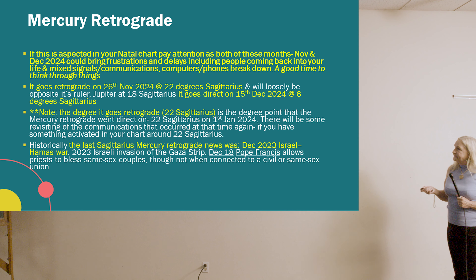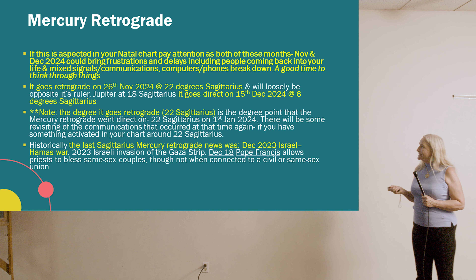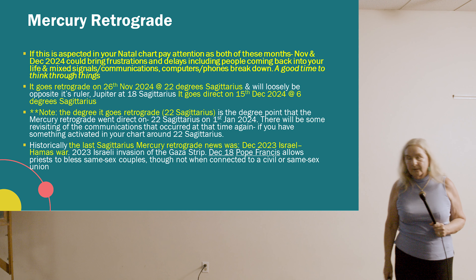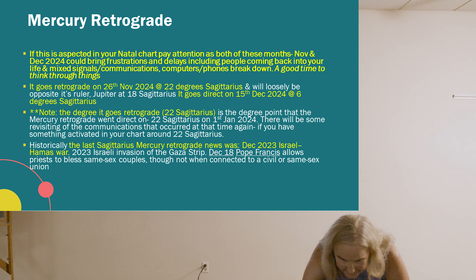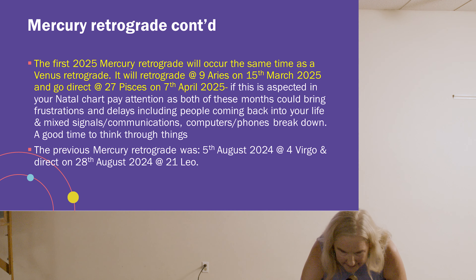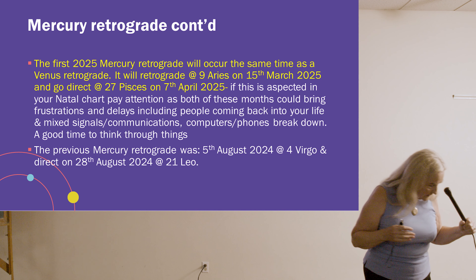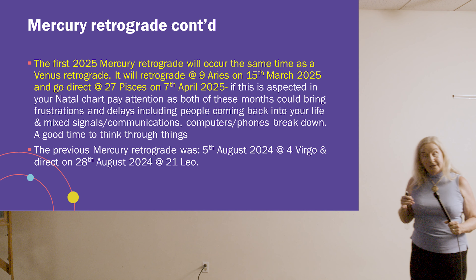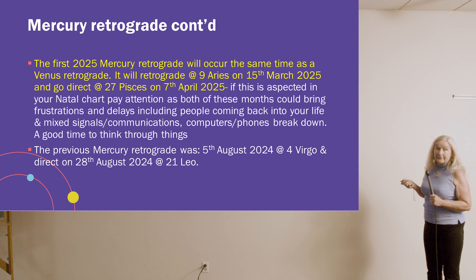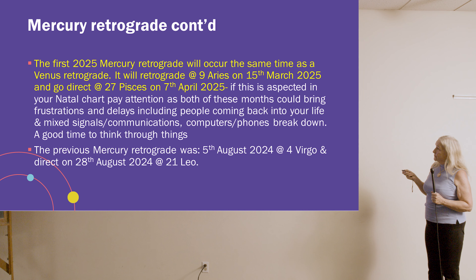Another thing that happened during that last December 2023 Mercury retrograde: Pope Francis allowed priests to bless same-sex couples. So something related to that may also rear its head again. Regarding the concurrent 2025 Mercury retrograde: it retrogrades at 9 Aries on the 15th of March and goes direct at 27 Pisces on the 7th of April.